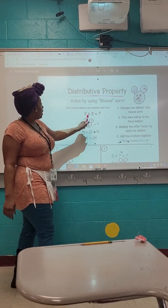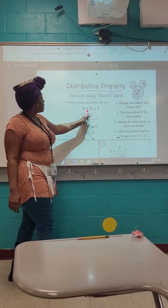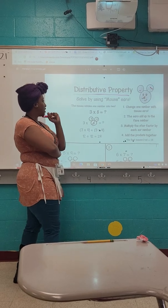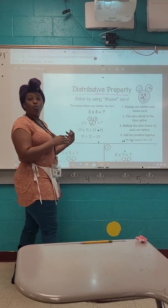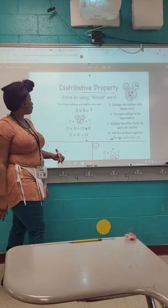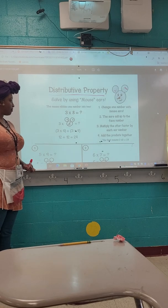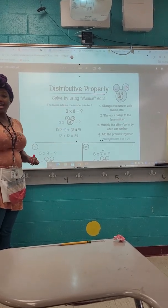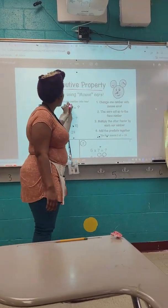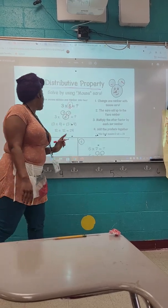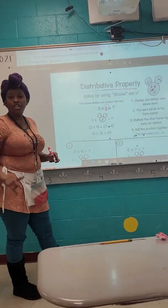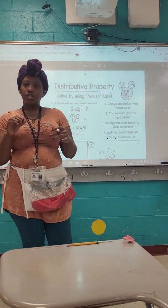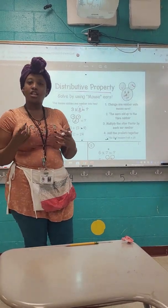Our first example we have three times eight. Where's our big number? Our eight is our big number. I'm going to circle right up here. Once we circle our eight, what are two numbers that we can use to make the number eight?